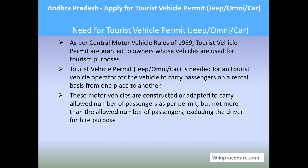Let us see the need for tourist vehicle permit jeep omni or car. A tourist vehicle is a kind of vehicle which we hire for family needs whenever we go on a trip or tour. It is charged per kilometer traveled on the specified route, and these vehicles will travel only to their permitted destinations. All these regulations are as per the tourist vehicle permit which an operator must obtain as per the Central Motor Vehicle Rules of 1989.